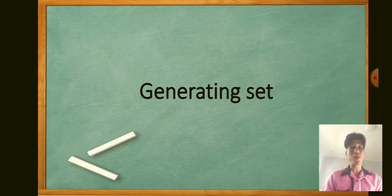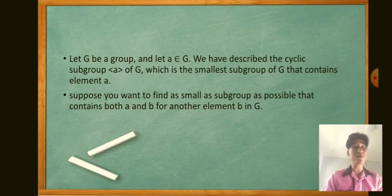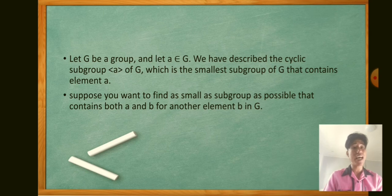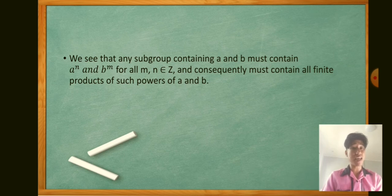Now we move to generating sets. Let G be a group and let a be an element of G. We have described the cyclic group which a generates in G, which is the smallest subgroup of G containing element a. Suppose we want to find the smallest subgroup possible that contains both a and b, for another element b in G. Any subgroup containing a and b must contain a^n and b^m for all integers n and m, and consequently must contain all finite products of such powers of a and b.